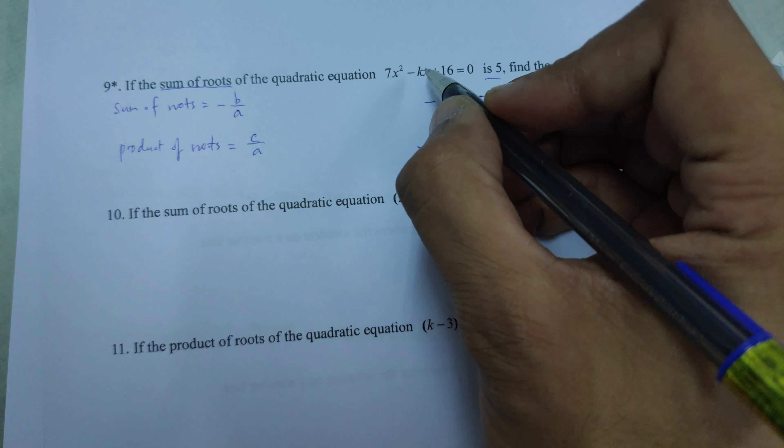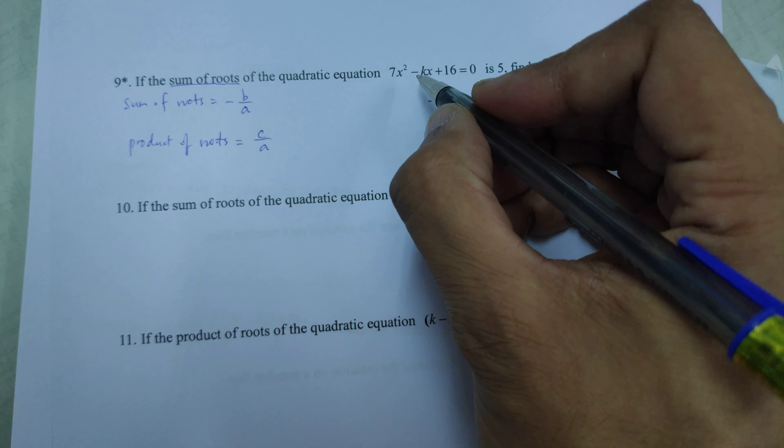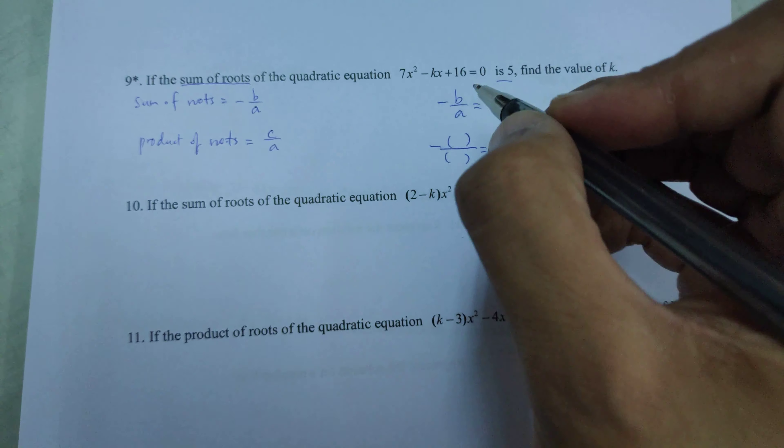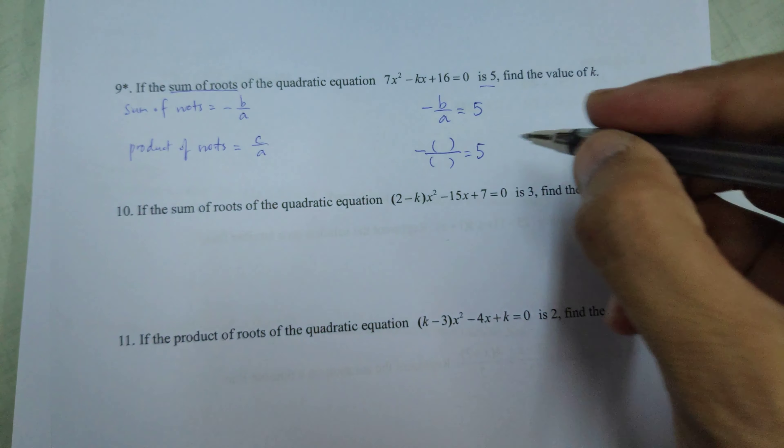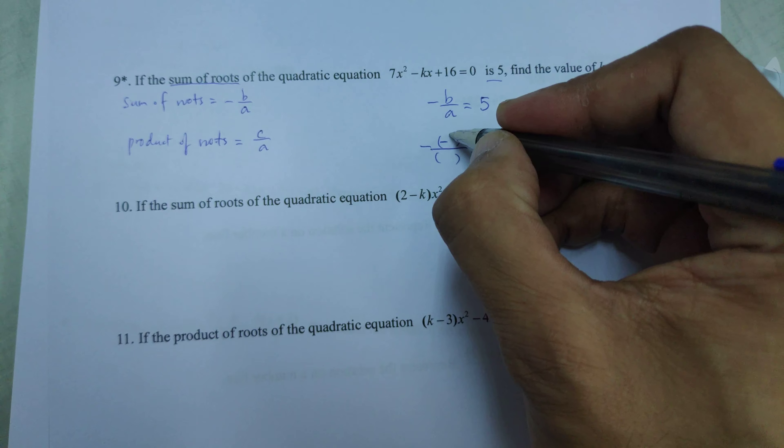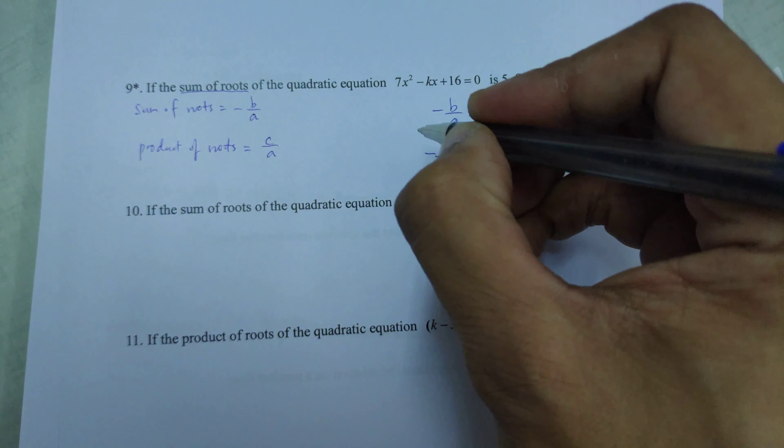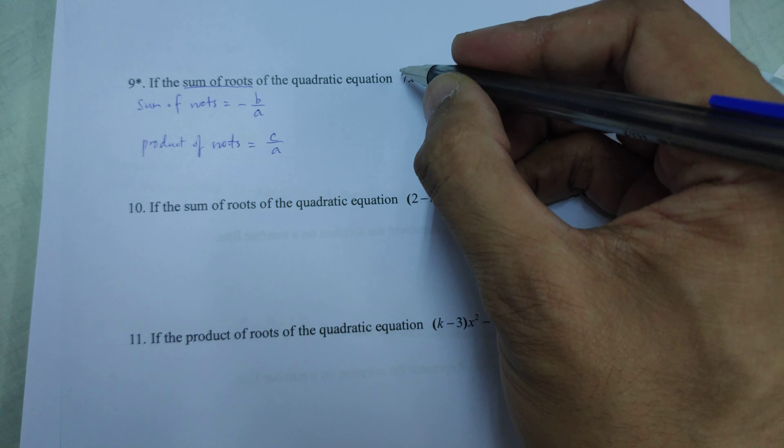What is the value of b? B is not k but negative k. This negative was from the formula itself, so we still have to put the negative k in the place of b, and a is the first term.